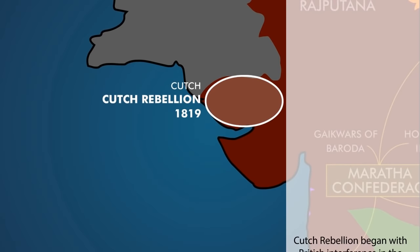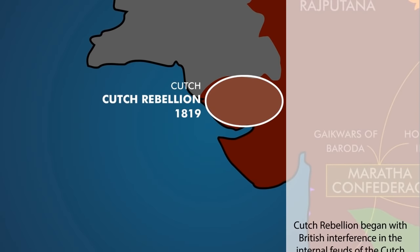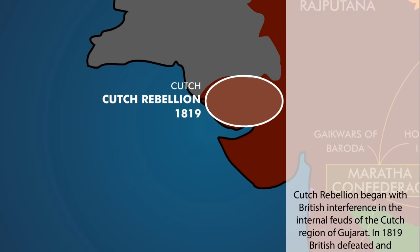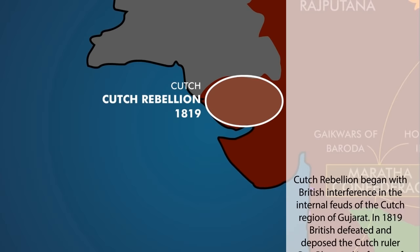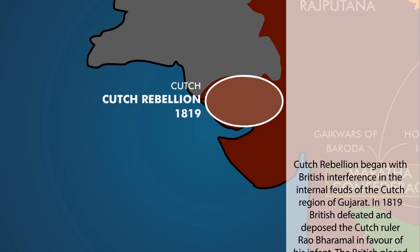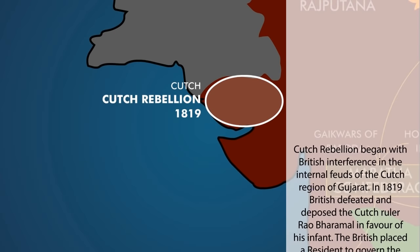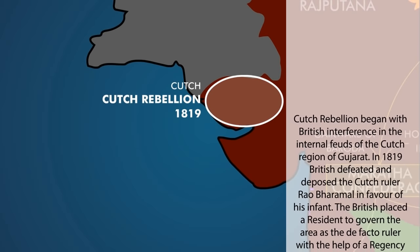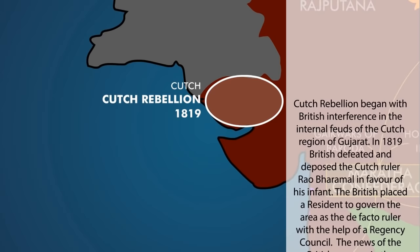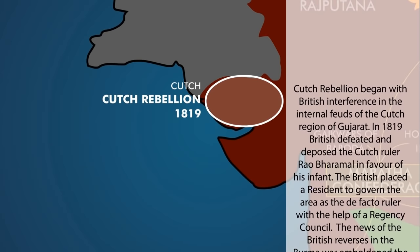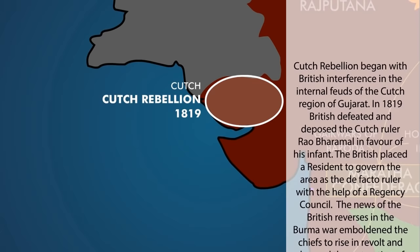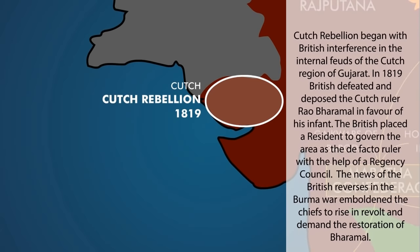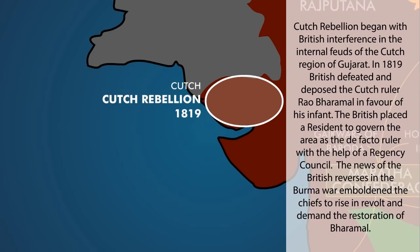The Kach rebellion began with British interference in the internal feuds of the Kach region of Gujarat. In 1819, the British defeated and deposed the Kach ruler, Rao Bharamal, in favour of his infant. The British placed a resident to govern the area as the de facto ruler with the help of a regency council. The news of British reverses in the Burma war emboldened the chiefs to rise in revolt and demand the restoration of Bharamal.